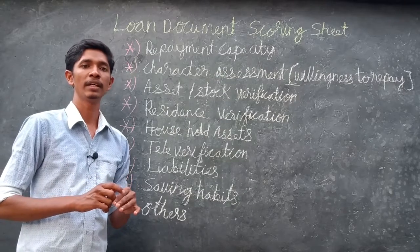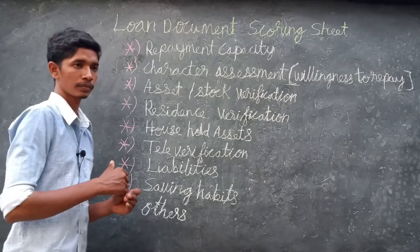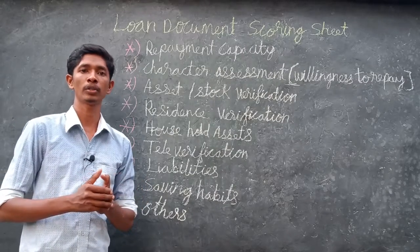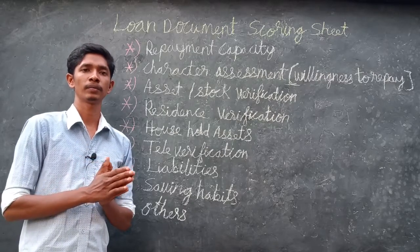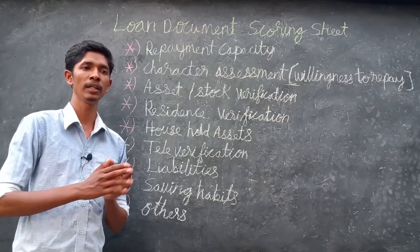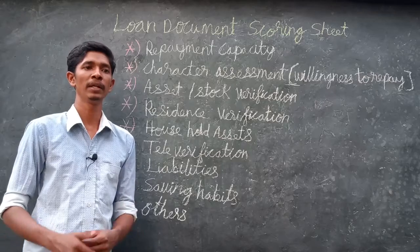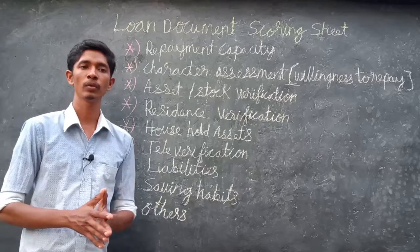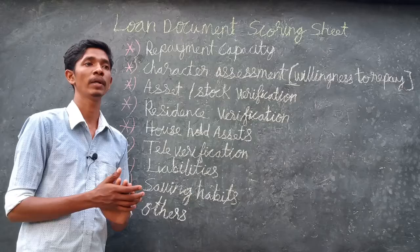Asset and stock verification is done by the loan passing officer. They do not inform the customer in advance — they will suddenly visit to verify the stock. For example, sometimes a customer may show a lot of goods and material, but after two days there is no stock — like a movie set staged for appearance.